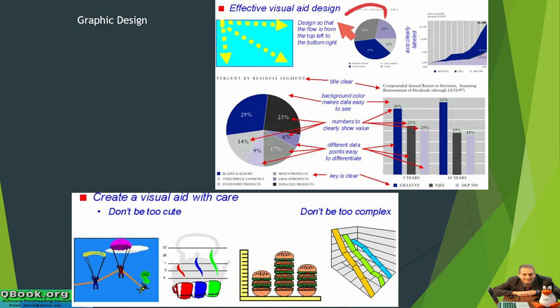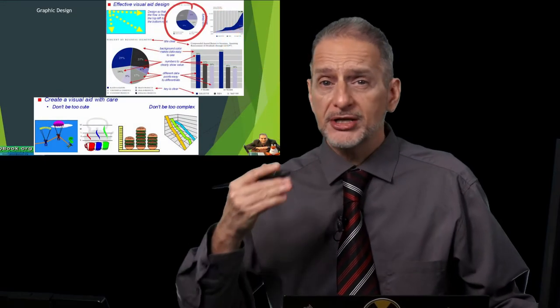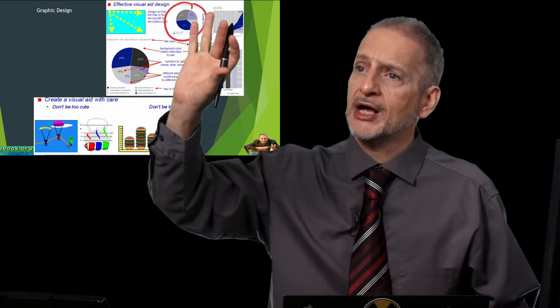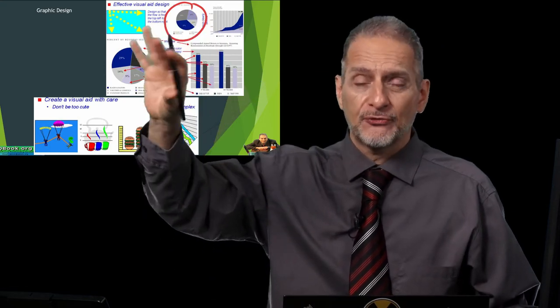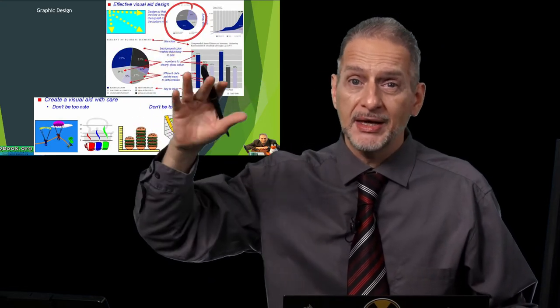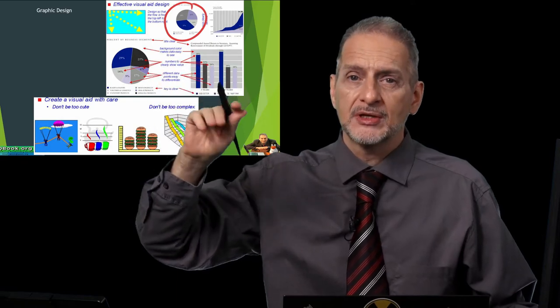A pie chart is a great way to present information because it's very clear and people understand it easily. Use very easy-to-see colors, but not too bright — you don't want bright reds and bright yellows. The reason is it may look good on your computer screen, but when you show it on the LCD projector, it may not be very clear, especially when you're putting words and colors together.